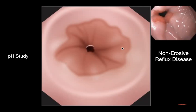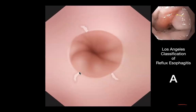This occurs when the esophageal lining's defense mechanism is able to withstand the acid damage. Sometimes the defense mechanisms break down, the lining breaks down, and leads to what is called an erosion. Here is an endoscopy image of an erosion. If the length of the erosion is less than 5 millimeters, it is a very mild grade of reflux esophagitis.